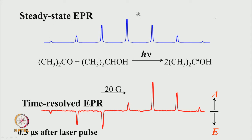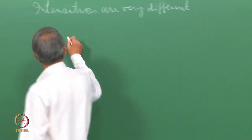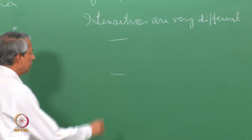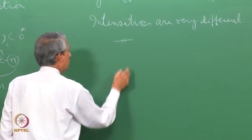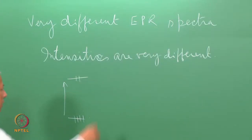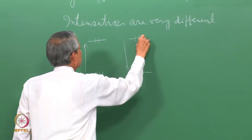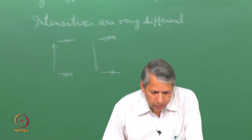If the spectrometer is set up properly to get the absorption spectrum, then lines going up are showing absorptive signal and lines going in the opposite direction are showing emissive signal — that is very unusual. The normal distribution of spins in a pair of Zeeman levels gives a net absorptive signal. When you see an emissive signal going downward, it means the upper levels are more populated than the lower ones — that is the only way one can explain this observation.